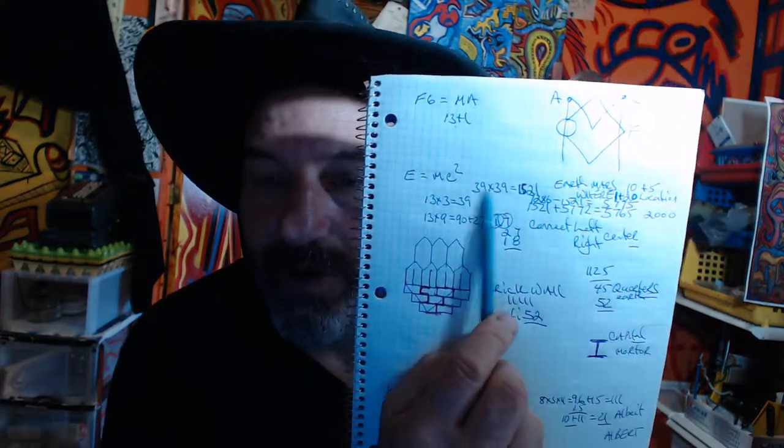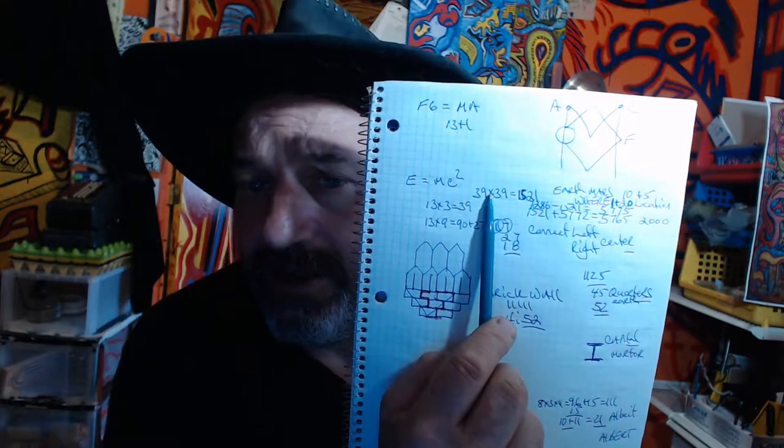E equals MC squared. 39, okay. And the highway 93. This highway runs over Hoover Dam. It's funny that the 31st president, Herbert Hoover, HH88, running from Arizona. Yuma, Arizona. Yuma, Arizona. Ma. Yuma.